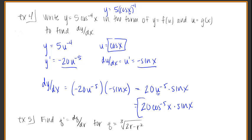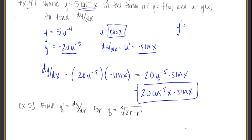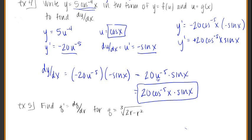That's the second way of looking at it. If you didn't want to use substitution but just started from the function directly: bring down the negative 4 in front to get negative 20, cosine to the negative 5th of x, then multiply by the derivative of cosine x, which is negative sine x. The two negatives give positive — positive 20 cosine to the negative 5th of x times sine x. The exact same answer either way.